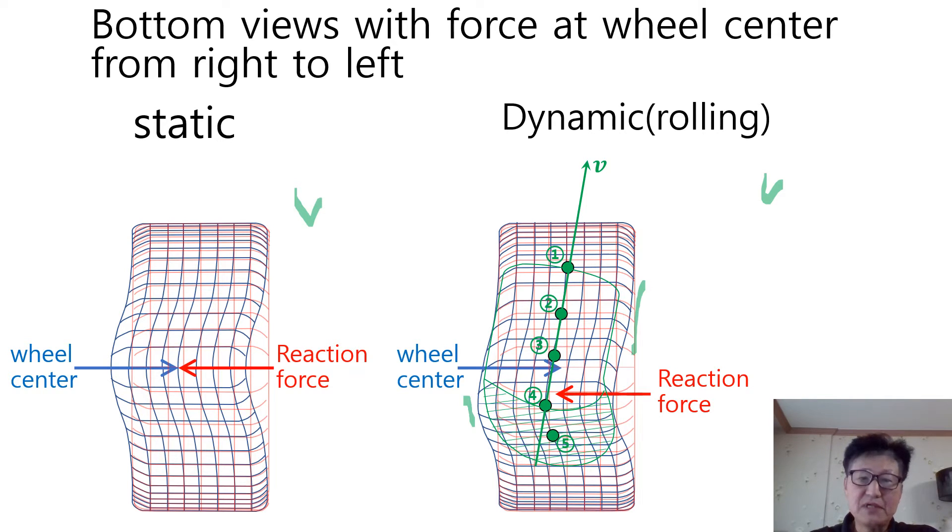The number from 0.1 through 0.5 describes the whole path for one point of the tire arbitrarily chosen. The point enters the tire contact patch at the number 1 location.